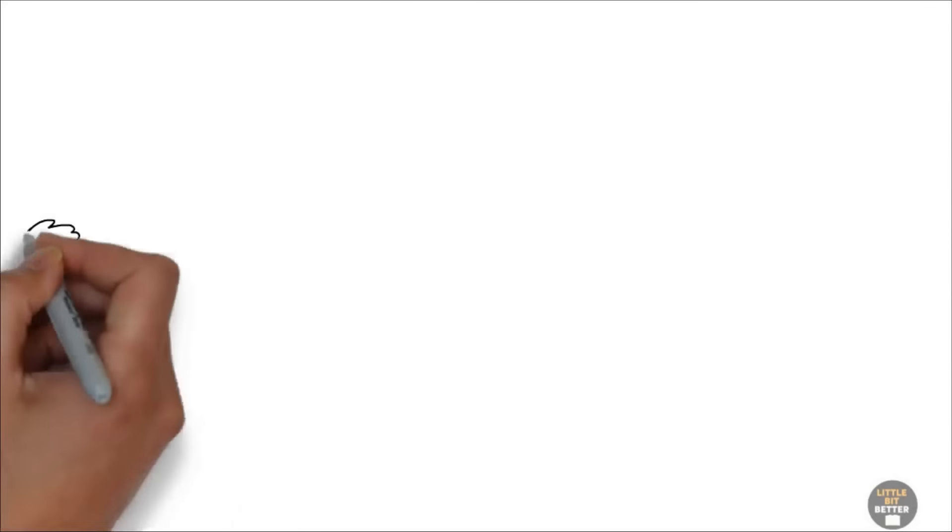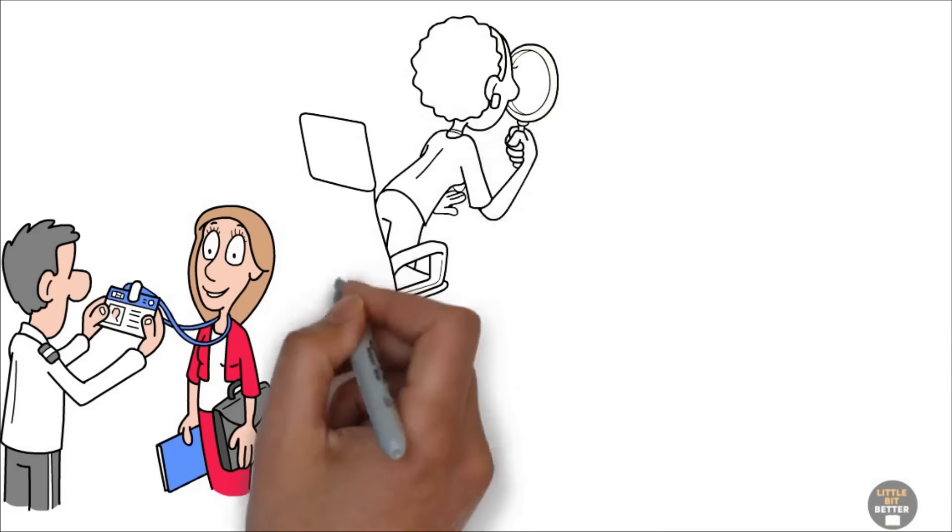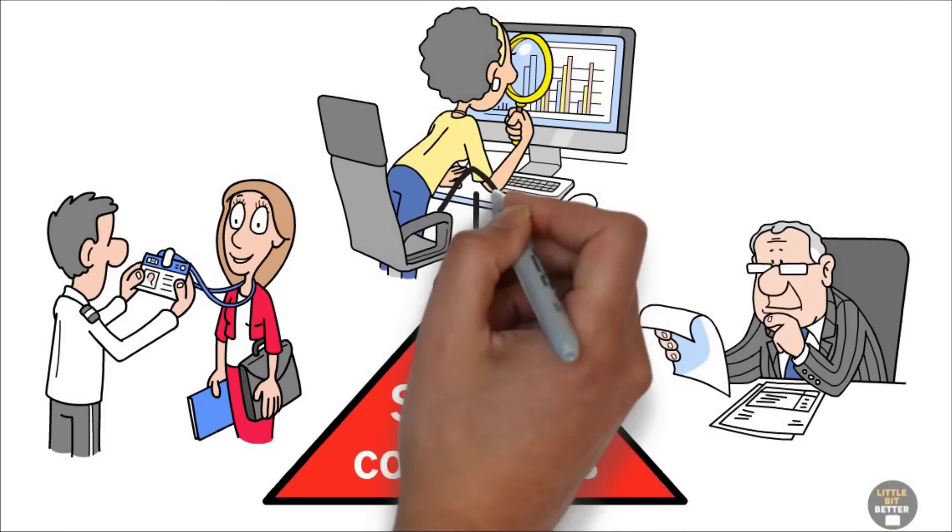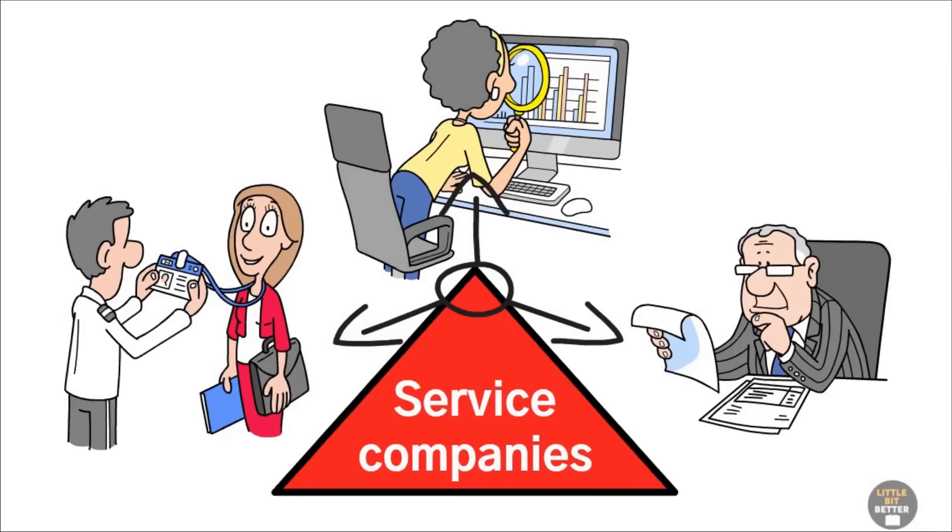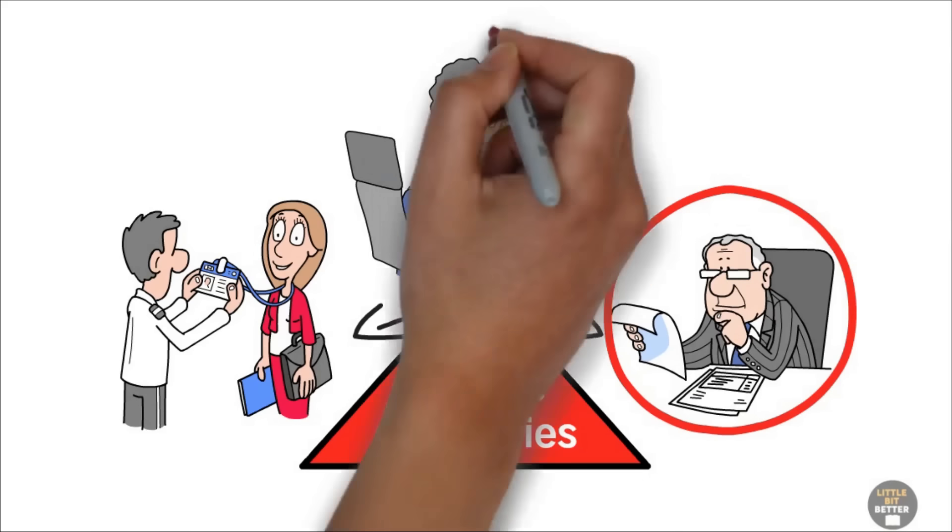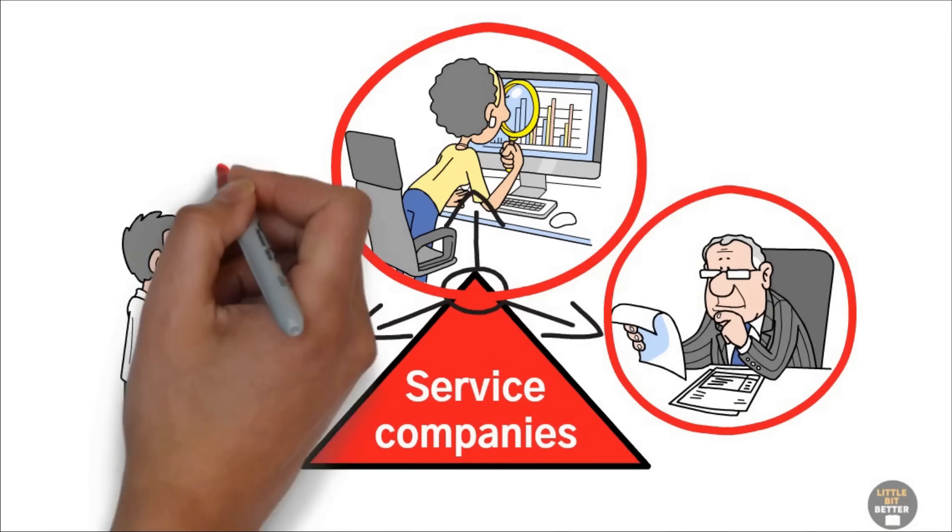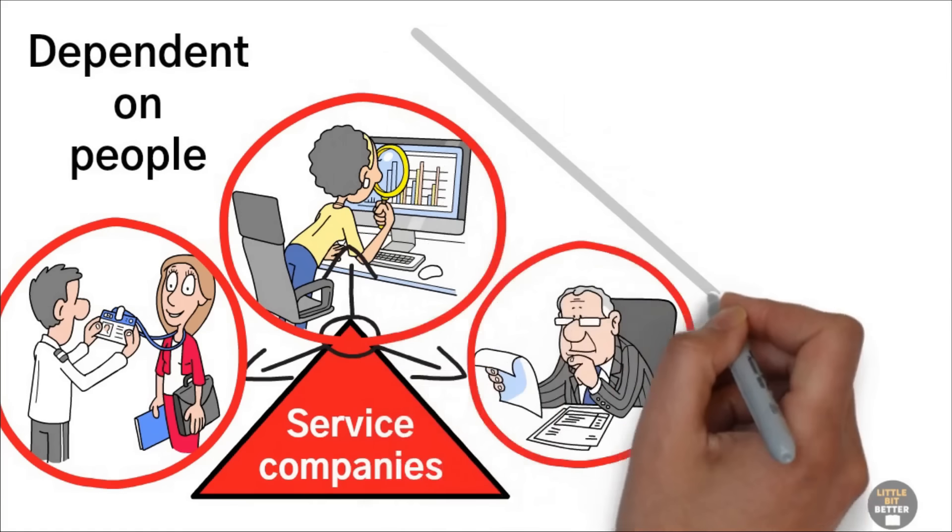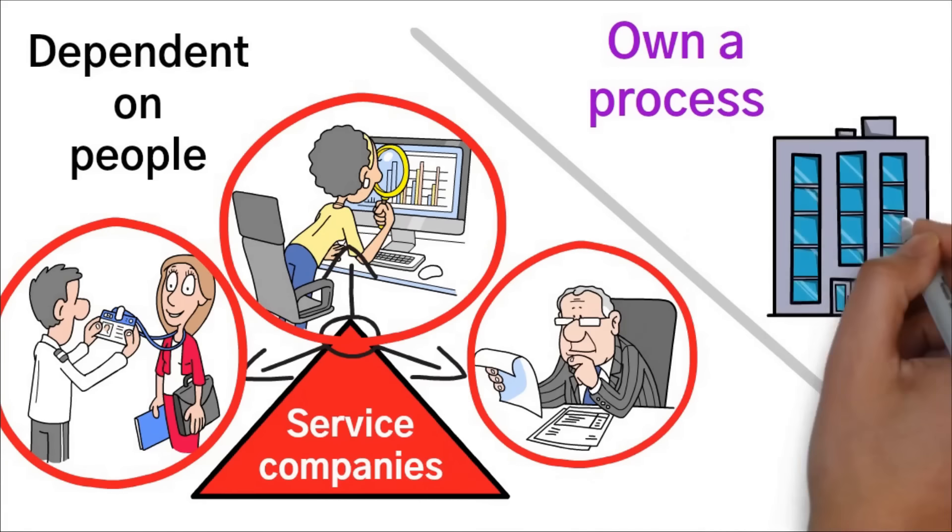A service company is simply a collection of people with specific expertise who offer their services to the company. Good service companies have some unique approaches and talented people. However, as long as they customize their approach to solving client problems, there is no scale to the business and its operations are dependent on people. This is why you need to own a process and become a product company.